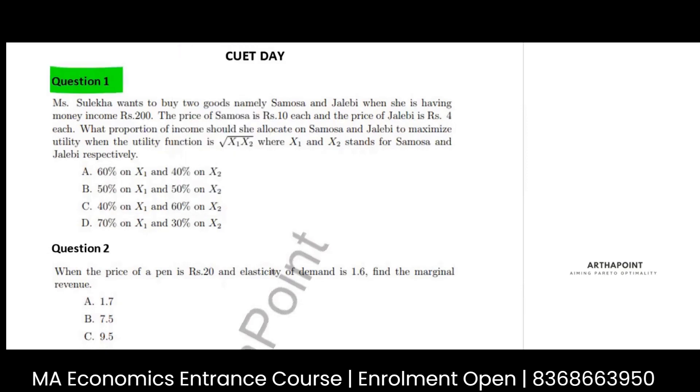Miss Sulekha wants to buy two goods namely samosa and jalebi when she is having money income of 200. The price of samosa is 10 each and the price of jalebi is 4 each. What proportion of income should she allocate on samosa and jalebi to maximize utility when the utility function is given to you as u of x1, x2 under root?